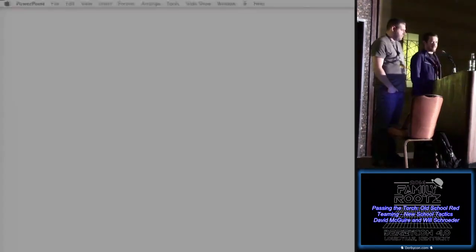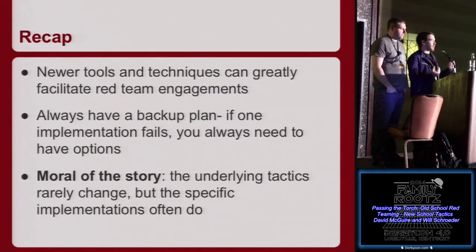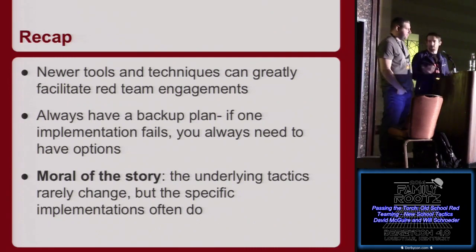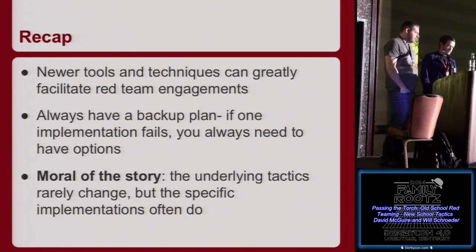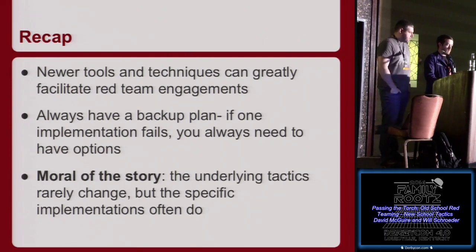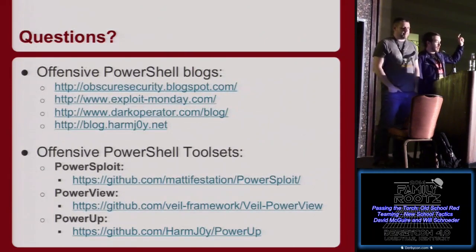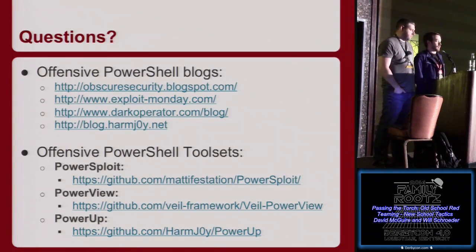Just to recap: newer tools and techniques can help facilitate red team engagements, but the underlying tactics haven't really changed — these things are still really effective. It's always good to have a backup plan: if PowerShell is disabled or AV is hitting certain tools, you always want to be able to have a backup. The moral of the story is underlying tactics don't really change, but implementations can. And as you noticed, a lot of the stuff Will did is really quick — you're able to bring some of these more advanced tactics that took a lot of steps before and bring them more into your pen test within a limited timeframe. We have some offensive PowerShell blogs from Obscure Security, Matt Graeber's blog, exploit Monday, and Dark Operator. Tool sets covered: PowerSploit, PowerView, and PowerUp.